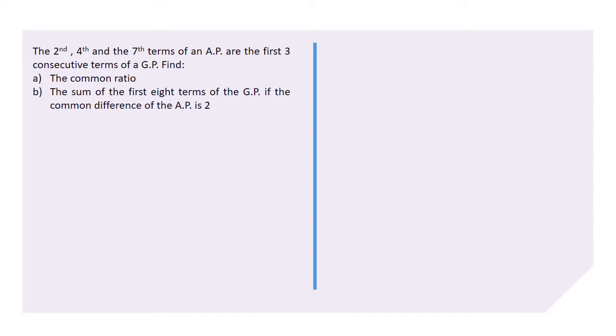Welcome to Easy Math. In this lesson, we're going to try out an example that has to do with the concepts that you have learned in GP and also some of them from AP. The question says the 2nd, 4th, and 7th terms for an AP are also the first three consecutive terms for a GP. Find the common ratio and sum of the first eight terms for the GP if the common difference for the AP is 2.